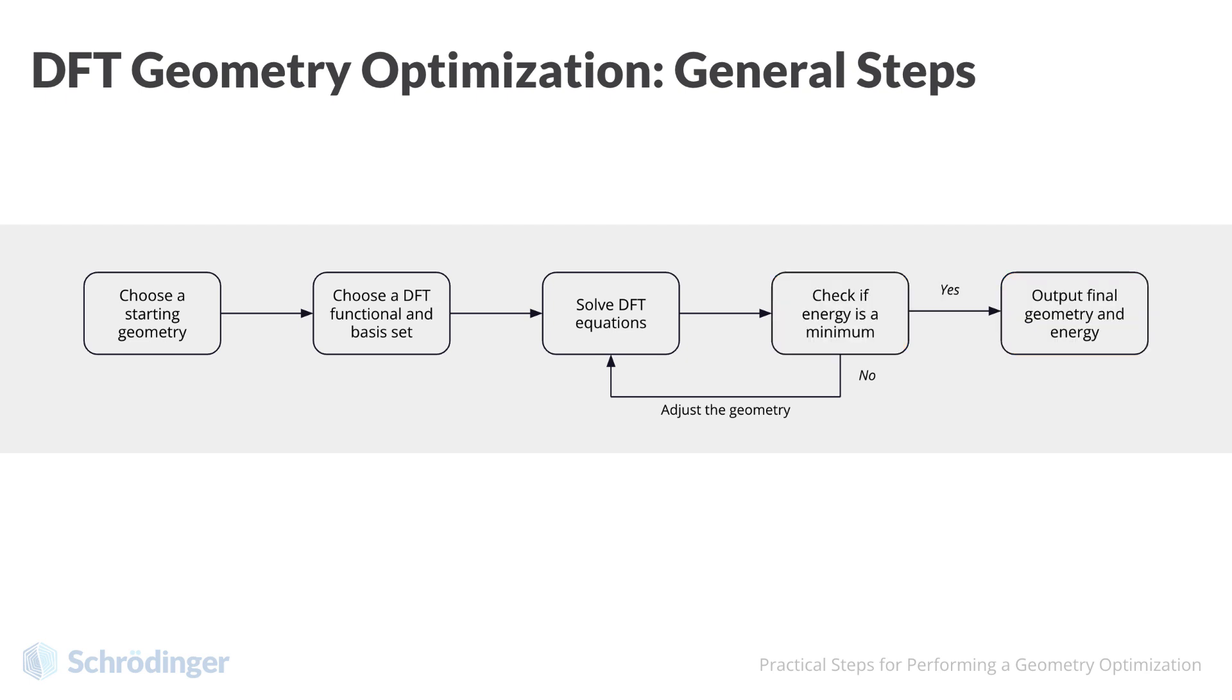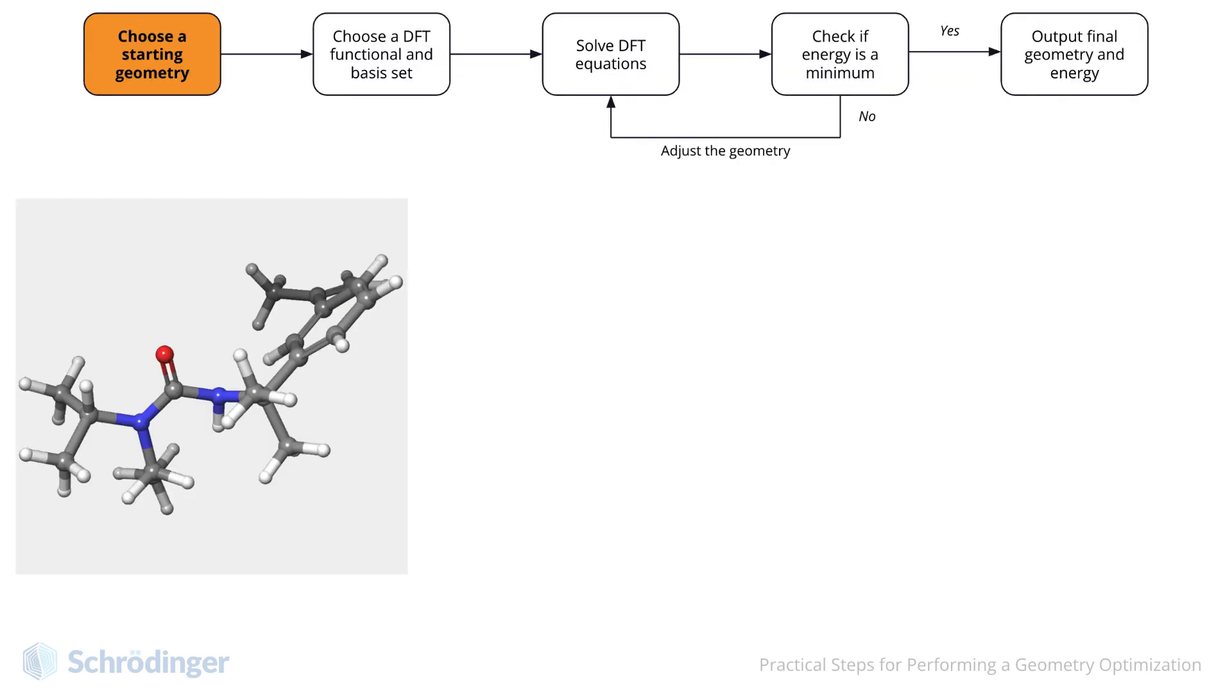Let's follow a few steps of this process dynamically to understand how this works. Here we have a small molecule that is actually an interesting monomer for sustainable polymer development. We must first choose a starting geometry, shown here on the left. Then, we must choose a functional and basis set. Again, for now, let's just accept these terms as inputs.